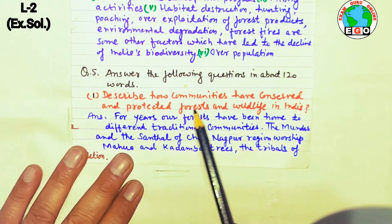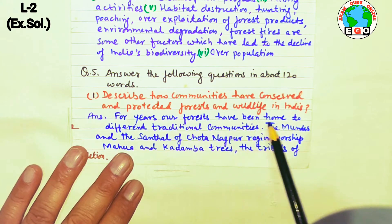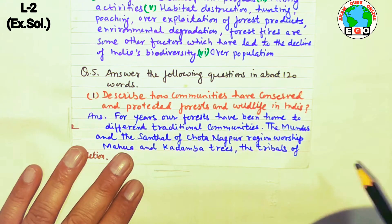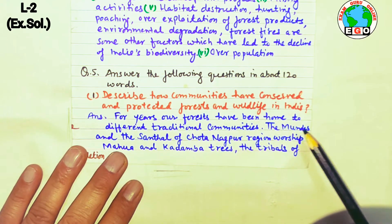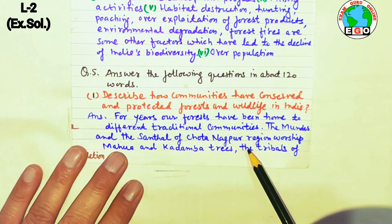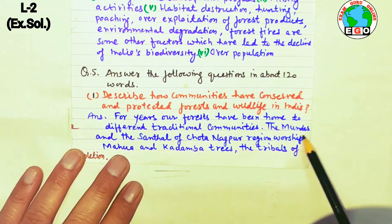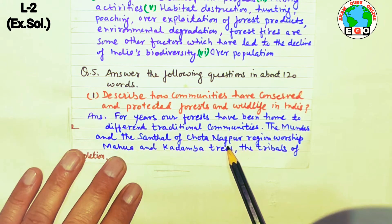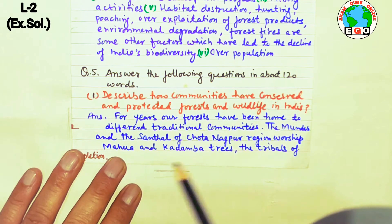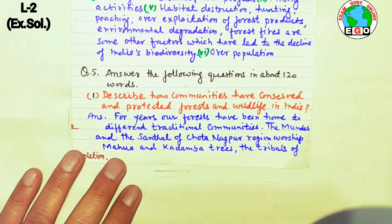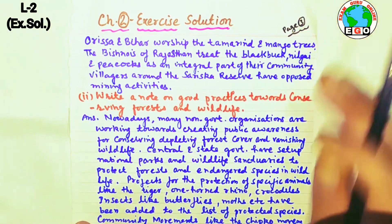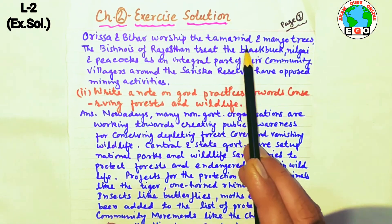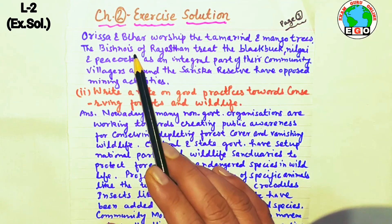Next question in about 120 words: describe how communities have conserved and protected forests and wildlife in India. For years, forests have been the home of different communities. The Mundas and Santals of Chota Nagpur worship trees like mahua and kadamba. The tribals of Odisha and Bihar also worship tamarind and mango trees.